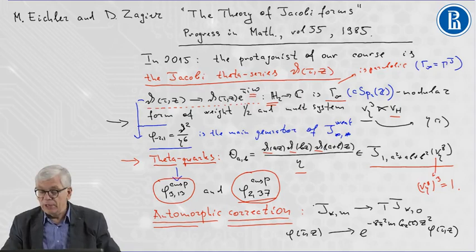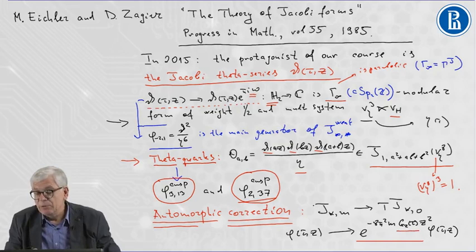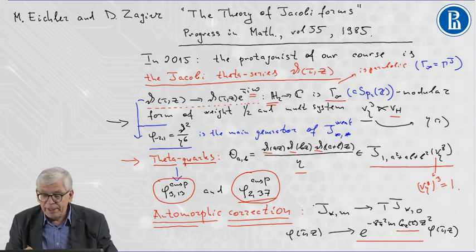And the automorphic correction is multiplication by the exponential function with the quasi-modular Eisenstein series of genus two.